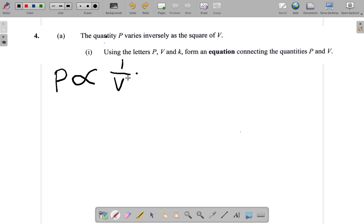As the square of V, so you need to put a square on V. So what you have is P varies with 1 over V squared.